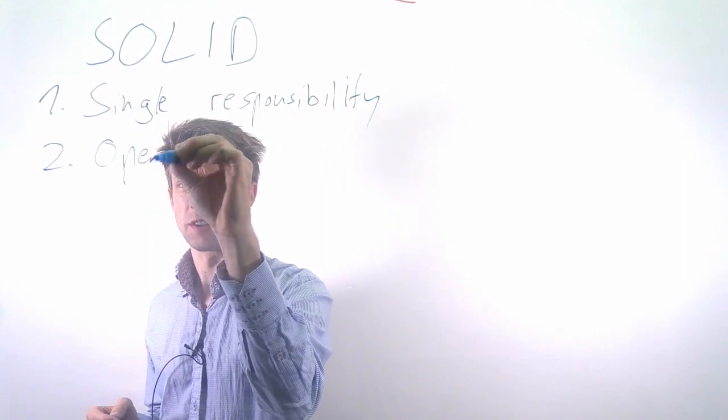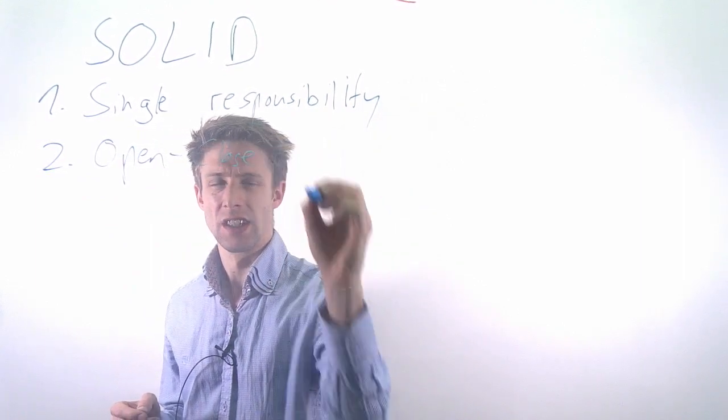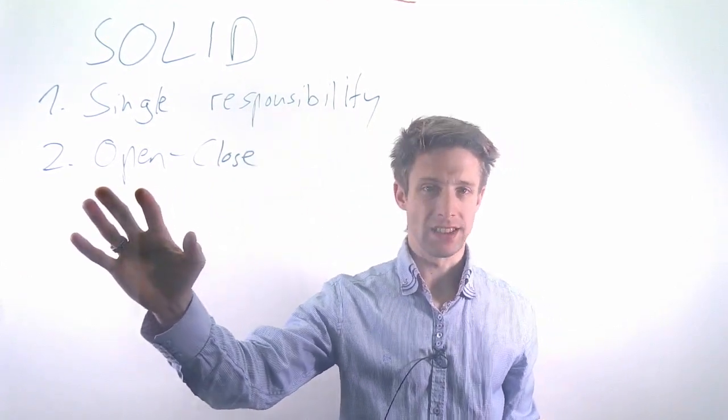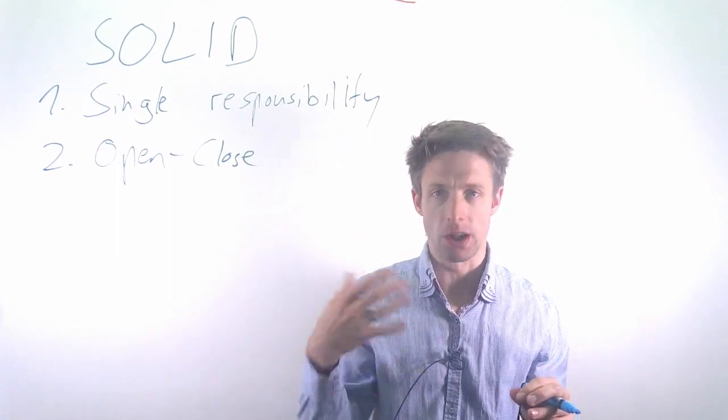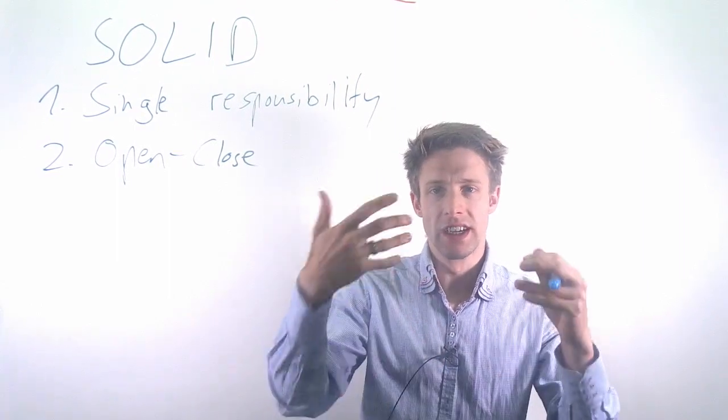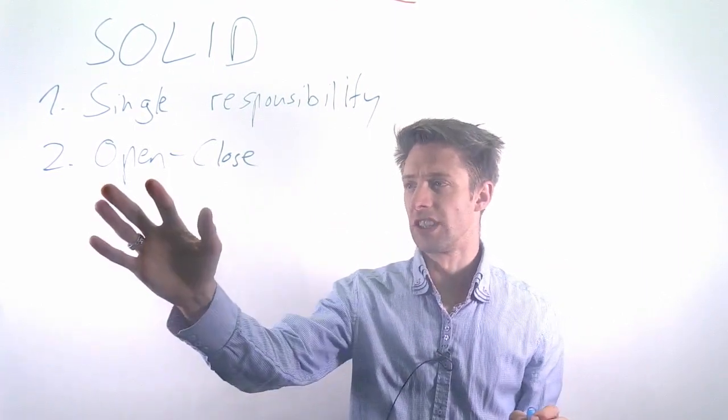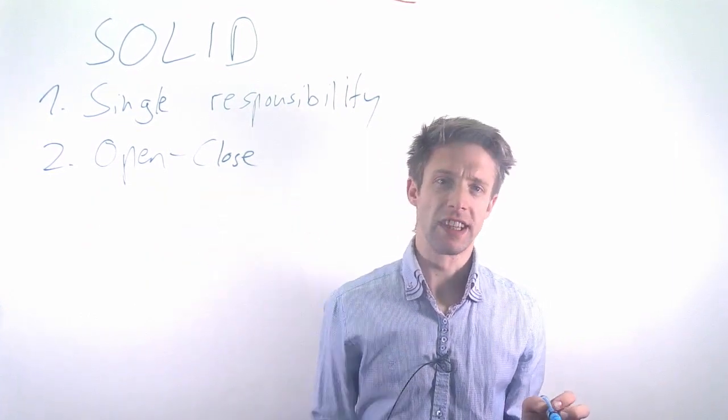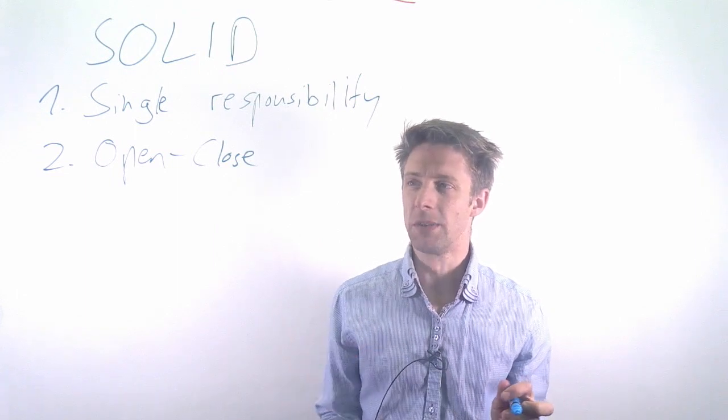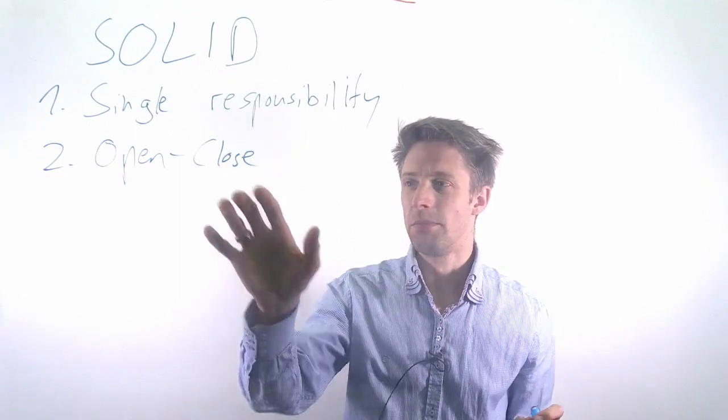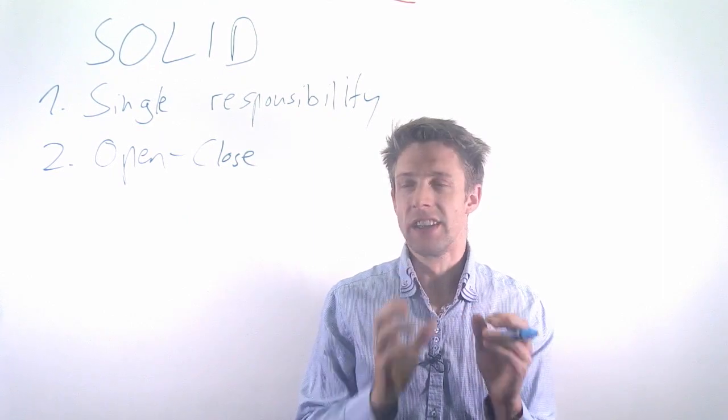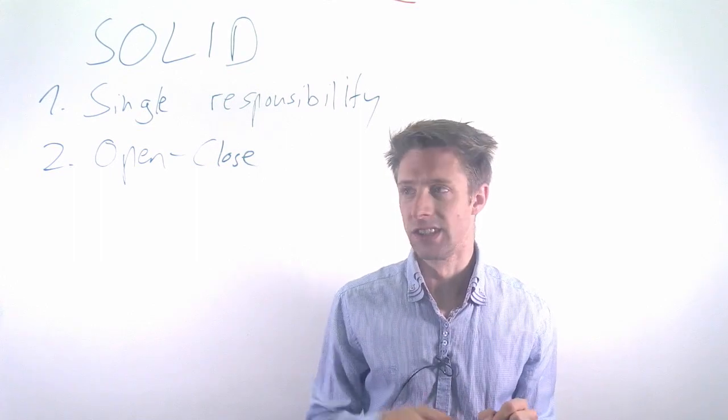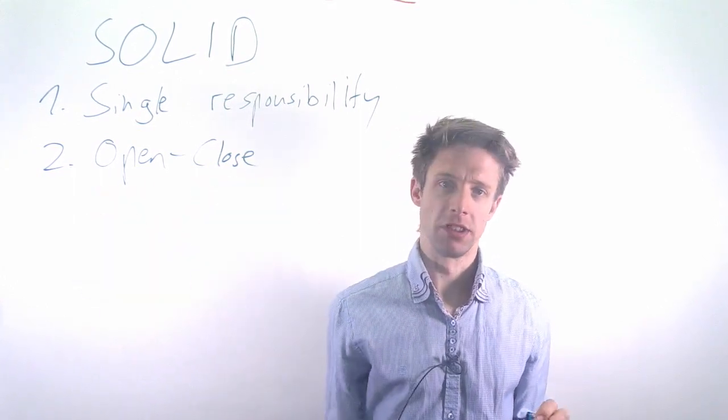The second principle is open-closed. A class should be open to extension, so you should be able to build on top of the class, use it for building new functionality, for example by creating a subclass. But it should be closed to modification, so you should not be able to change the internals. Everything internal should be kept private so you cannot access it. Open to extension, closed to modification.